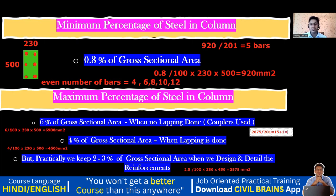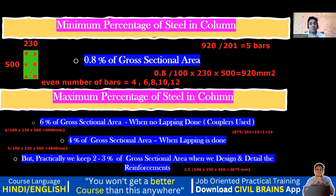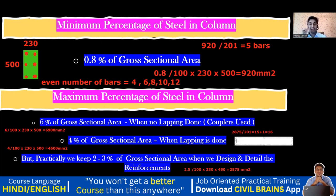So we need 16 number of 16 mm diameter bars in a 230×500 column. But is this practically possible? Not really — with that many bars, when pouring concrete and running the vibrator, there's too much congestion. So we increase the bar diameter instead: switch from 16 mm to 25 mm diameter.